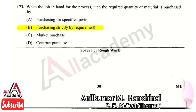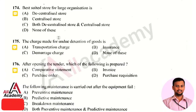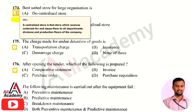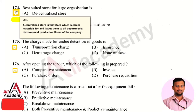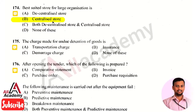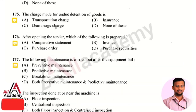The next question is: the best suited store for a large organization is? The right answer is option 2, centralized store. A centralized store is one that receives materials and issues them to all departments, divisions, and production floors of the company. Whatever materials are required by any department, they are distributed from the central store, making it most helpful for large organizations.